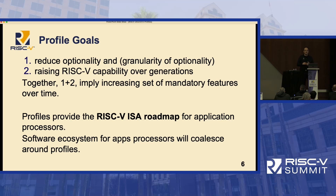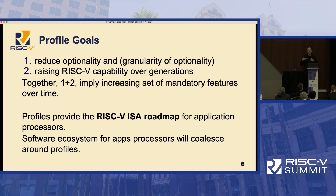The two main goals of profiles are to reduce optionality and also the granularity of optionality. There'll be a few coarse-grained options, and a subset of those options are not optional — you either do the whole option or none of it. We're also raising RISC-V capability over time. That combination means there's going to be an increasing amount of mandatory stuff you have to put in a RISC-V application processor to be compatible with the profiles. Profiles will provide this ISA roadmap for future RISC-V application processors, and the software ecosystem will coalesce around these profiles.